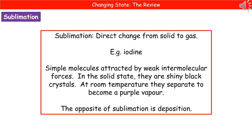One other change in state we do need to make ourselves aware of is sublimation. If we're talking about sublimation, we're talking about the direct change from solid to gas, and this is something that you could see happening with iodine. Iodine is made up of simple molecules attracted by weak intermolecular forces. So in the solid state, they're shiny black crystals, but at room temperature there's actually enough energy to make them separate to become a purple vapor — going straight from their solid state of black crystals to their gas state, the purple vapor.